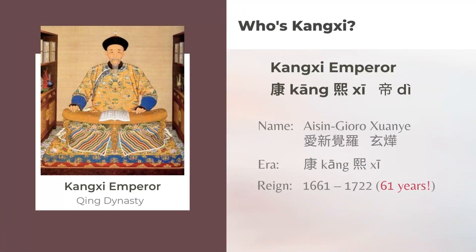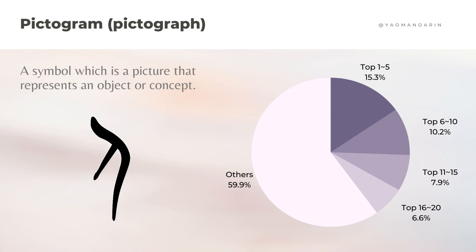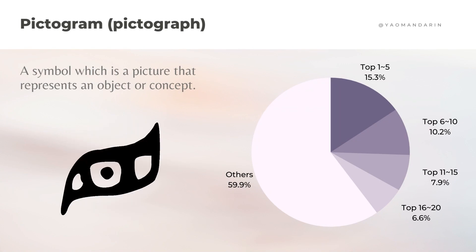You might ask: who's Kangxi? Kangxi is one of the emperors in the Qing dynasty. His personal name is Ai Xin Jue Luo Xuan Ye, and his era name is Kangxi. He ordered the compilation of a Chinese characters dictionary, known as the Kangxi Dictionary.